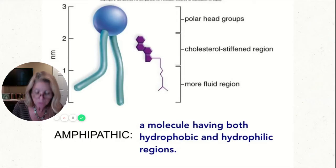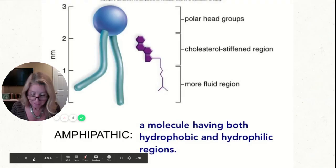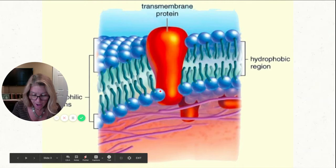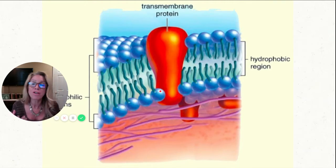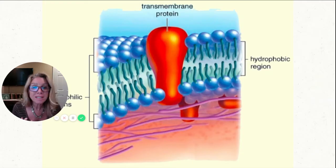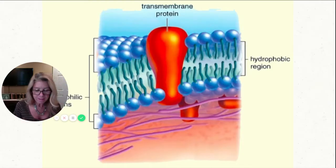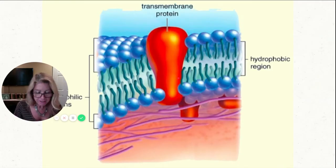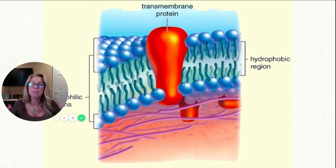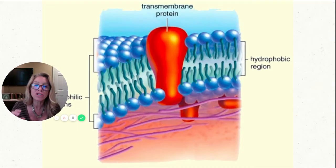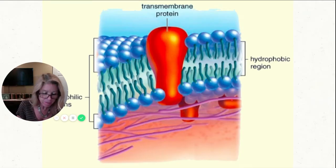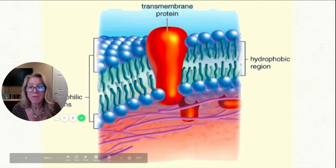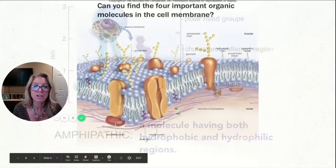If it's too hot, cholesterol prevents the membrane from becoming too fluid and breaking apart; if it's too cold, it prevents freezing. Proteins are what make membranes different and determine their functions. Integral proteins are completely embedded — a transmembrane protein is integral throughout, spanning the cell membrane. We'll see examples when they're channels and carriers. If it's peripheral, it's just on one side of the membrane. We'll talk about the G protein later; proteins have multiple functions that we'll be going over.